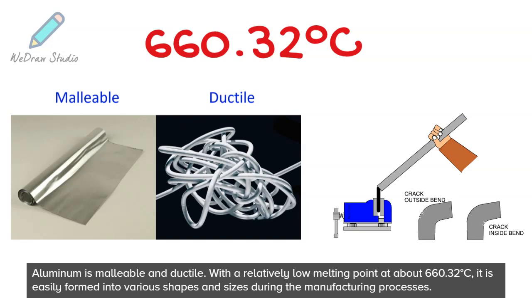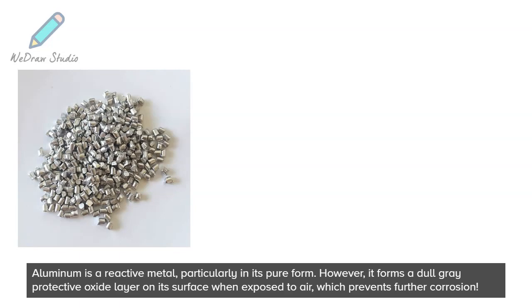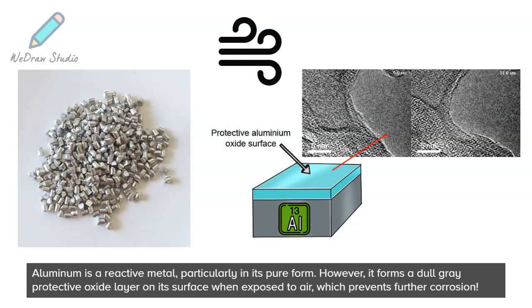Aluminum is a reactive metal, particularly in its pure form. However, it forms a dull gray protective oxide layer on its surface when exposed to air, which prevents further corrosion.